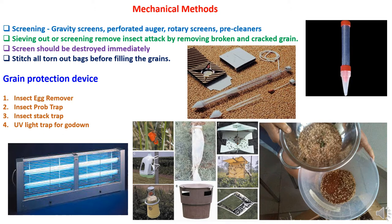The next method is mechanical methods. Under this, screening can be done using gravity screens, perforated augers, rotary screens, and pre-cleaners, which help sort out debris and infested material from stored grain or seed. Sieving keeps out insect attack by removing broken and cracked grains. Screened material should be destroyed immediately and not used for another product to avoid chances of infestation. All torn bags should be stitched before filling grains. Grain protection devices include insect egg removers, insect prop trays, and similar devices for godowns.